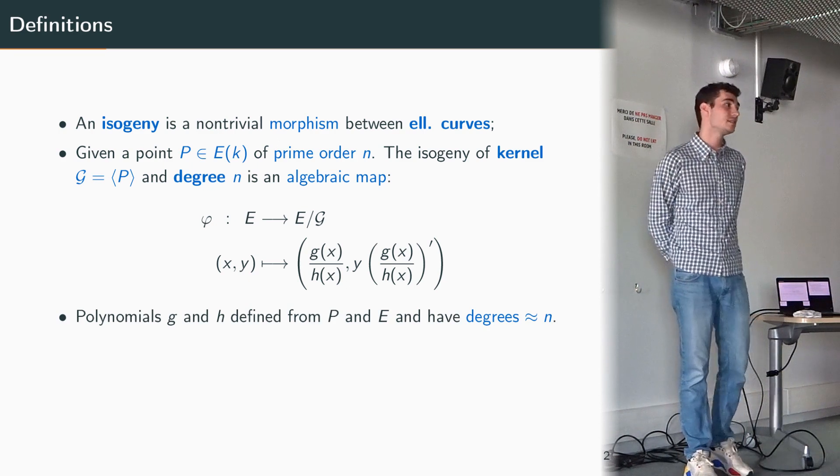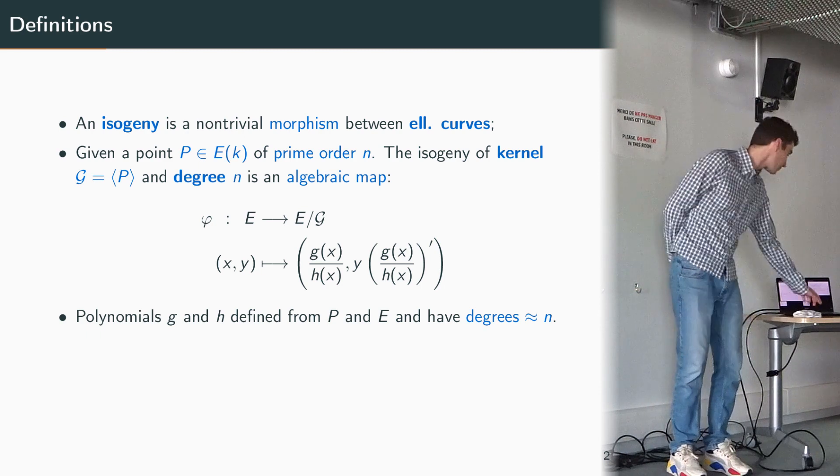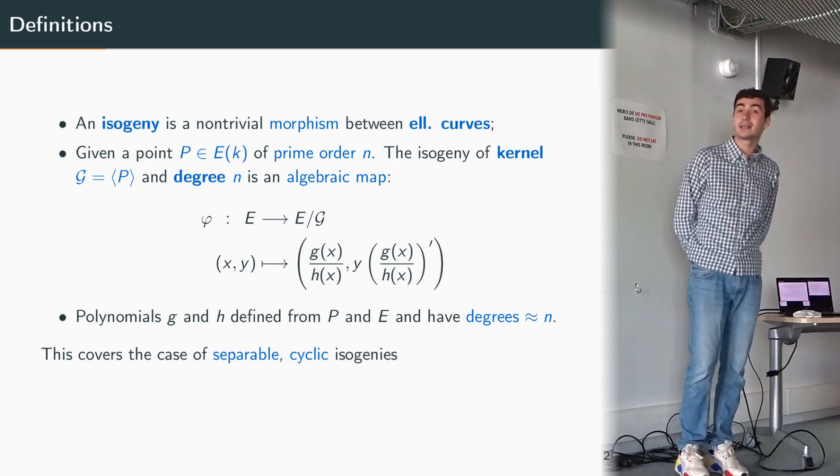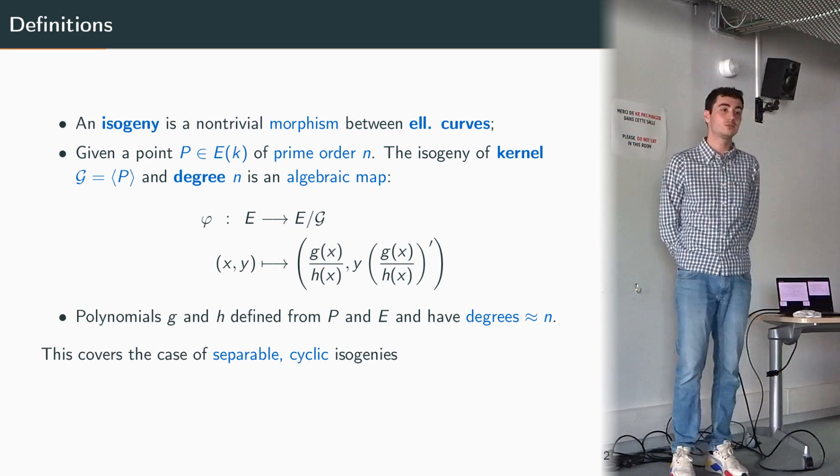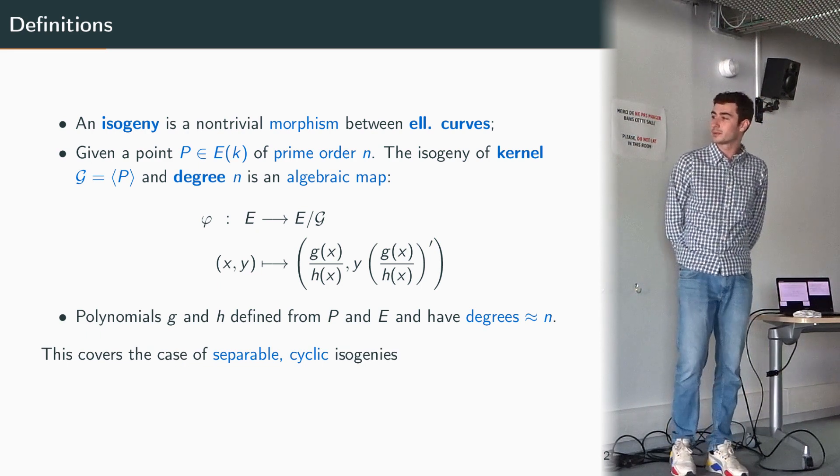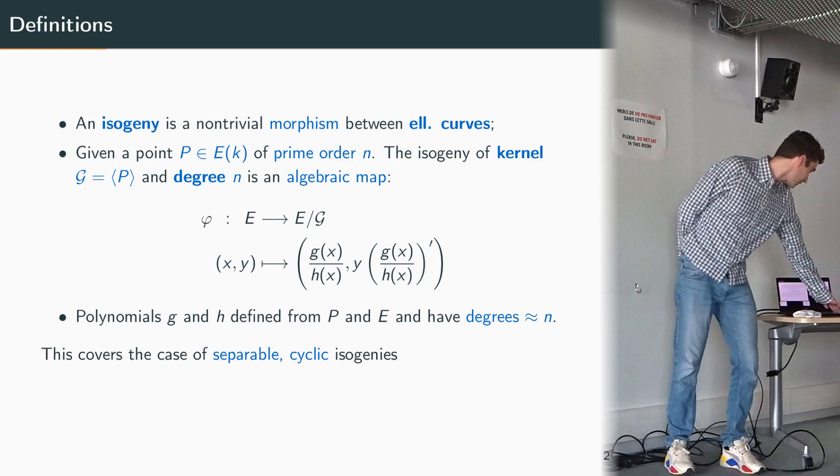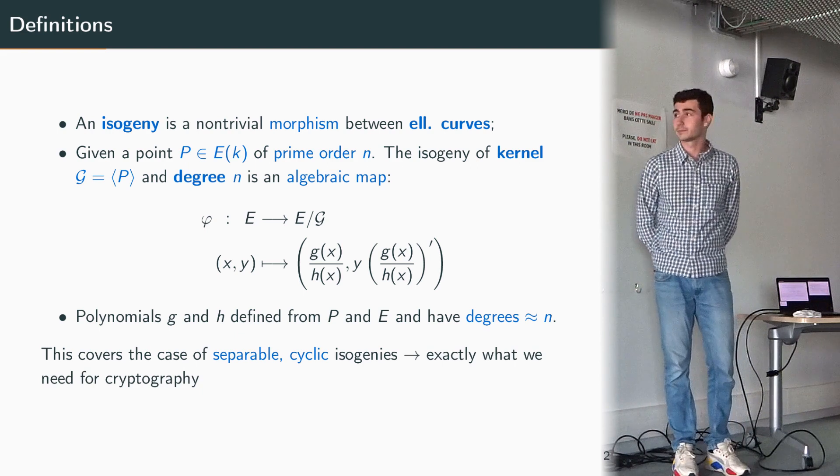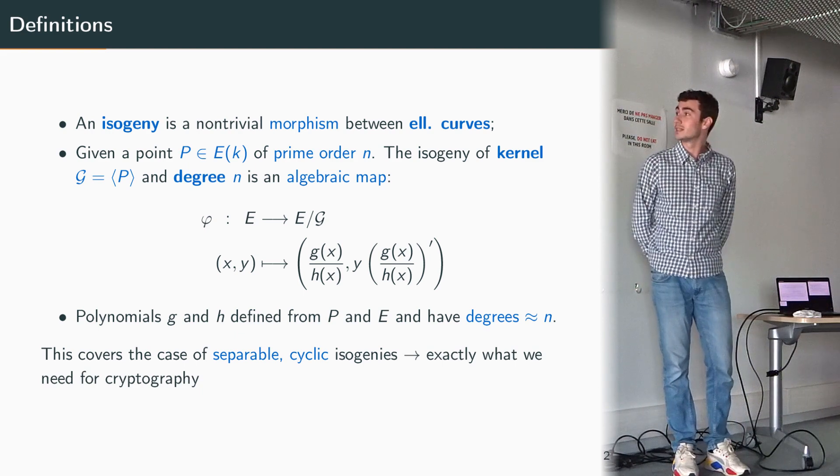In fact this covers the case of separable cyclic isogenies and if you don't know what this means it's not really important, but in fact this is exactly what we need for cryptography so this is the interesting case for us.